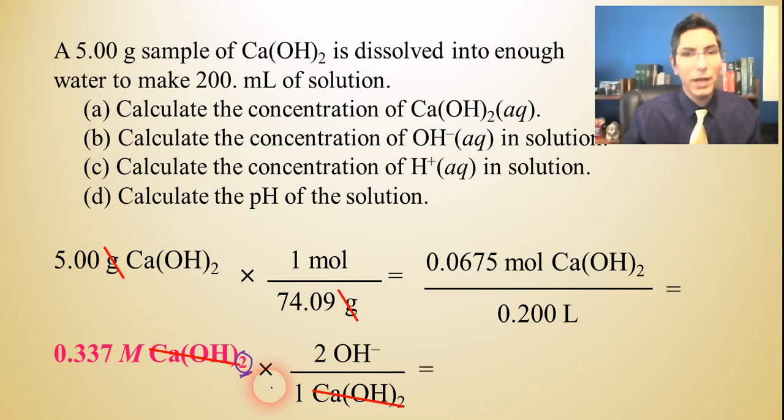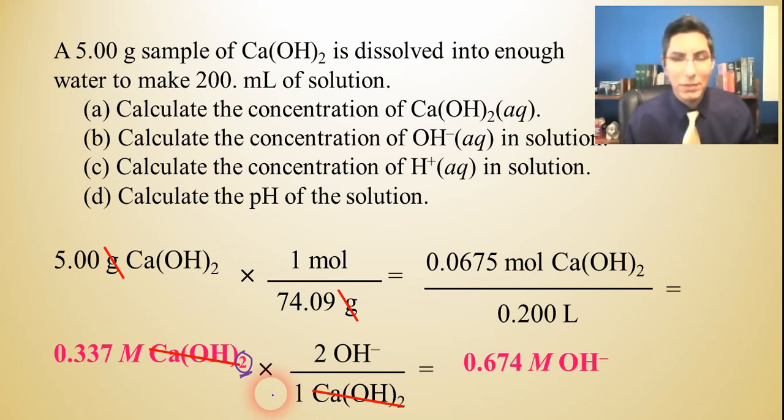So if I cancel and multiply, I find that the molarity of hydroxide is actually twice what the molarity of calcium hydroxide was. It's 0.674 molar hydroxide. So we have parts A and B answered.